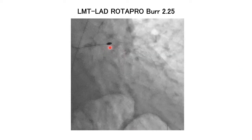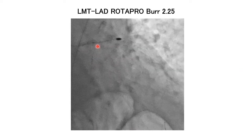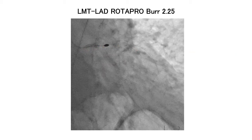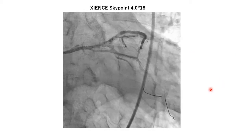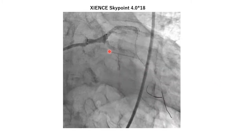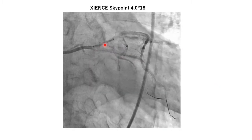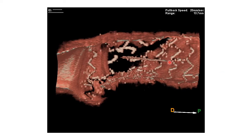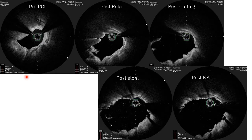For the left main trunk to LAD, the vessel is in a straight form, so rotablation was performed from LMT to LAD. A Xience Sky Point 4.0x18 stent was implanted from LMT to the LAD. The guidewire was crossed to the circumflex, and the crossing point looks okay. The stent link and LMT distal stenosis lesion are identified here.